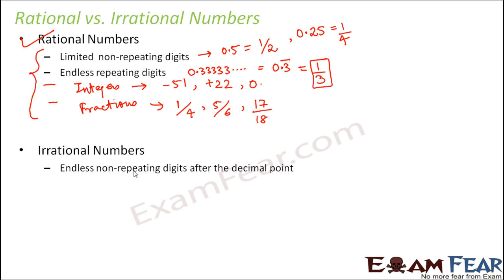What are those numbers which are not going to be rational? If you have endless non-repeating digits after the decimal point — we spoke about repeating digits being rational, and non-repeating digits limited to 1, 2, or 5 digits after the decimal being rational — but what if you have endlessly different digits? Let me give you an example.